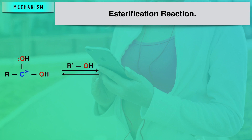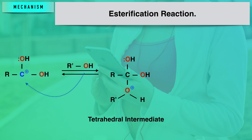In the next step, there will be further attack of alcohol, which is your second reactant in the esterification process. The oxygen of the alcohol attacks this electron-deficient carbon atom, resulting in the formation of a tetrahedral intermediate. This intermediate is tetrahedral because the central carbon atom is surrounded by four atoms or groups bounded on all four sides.